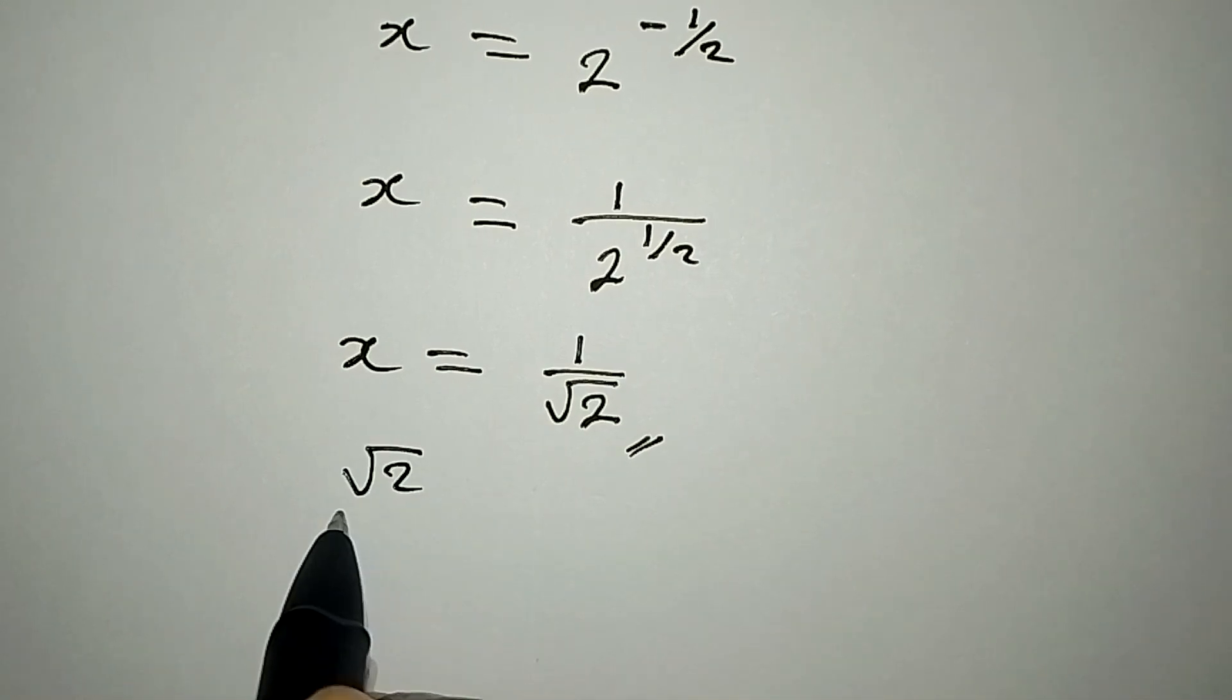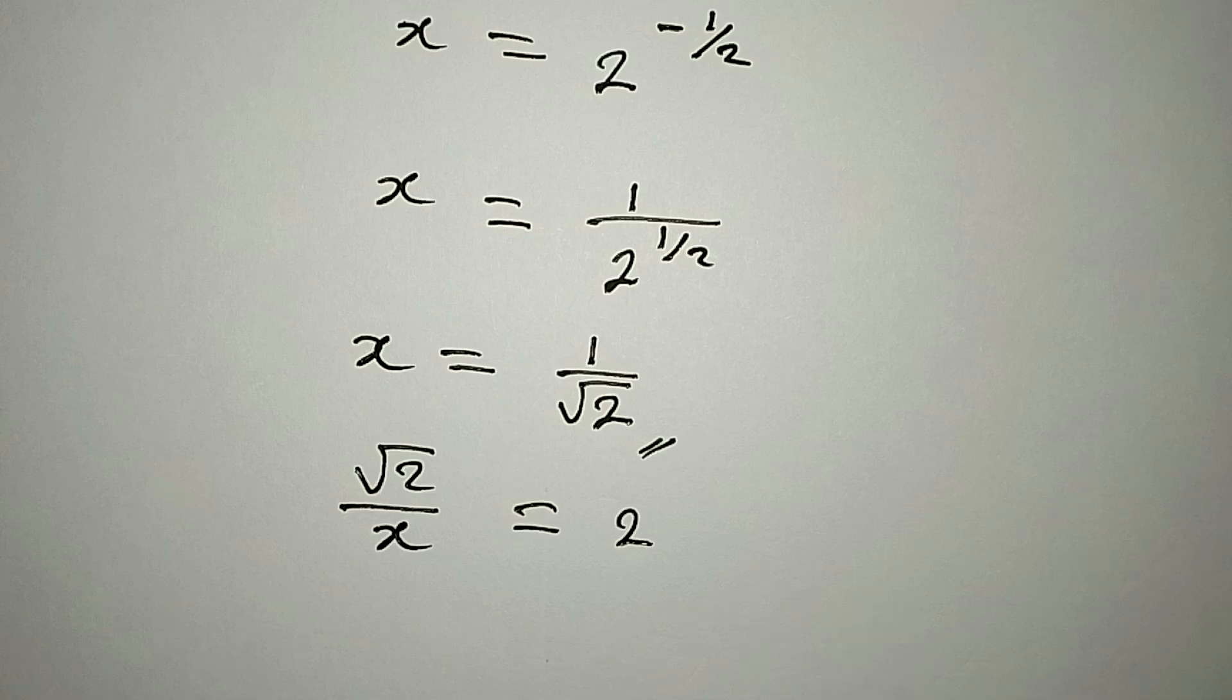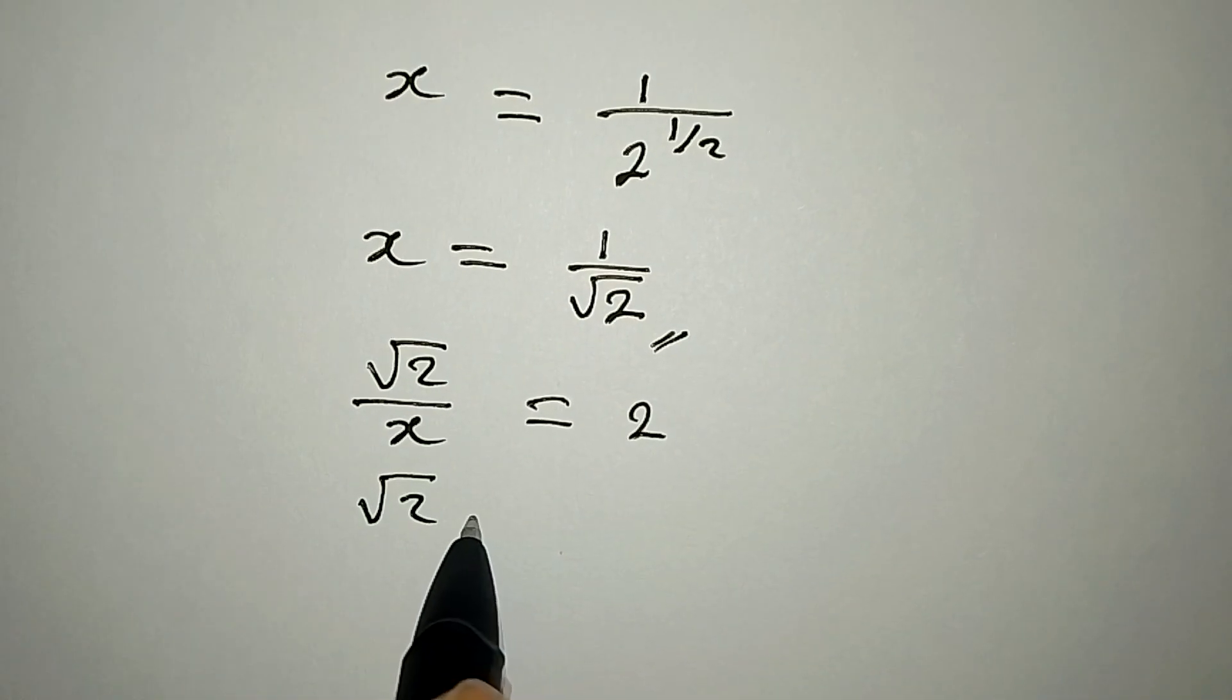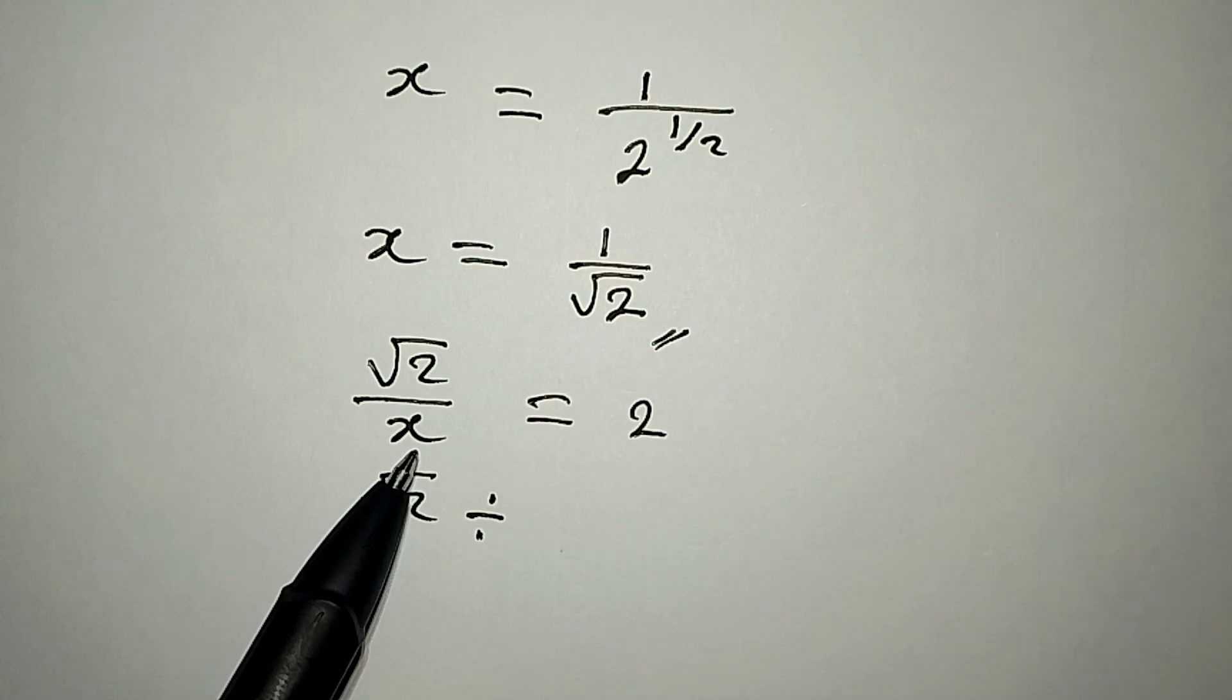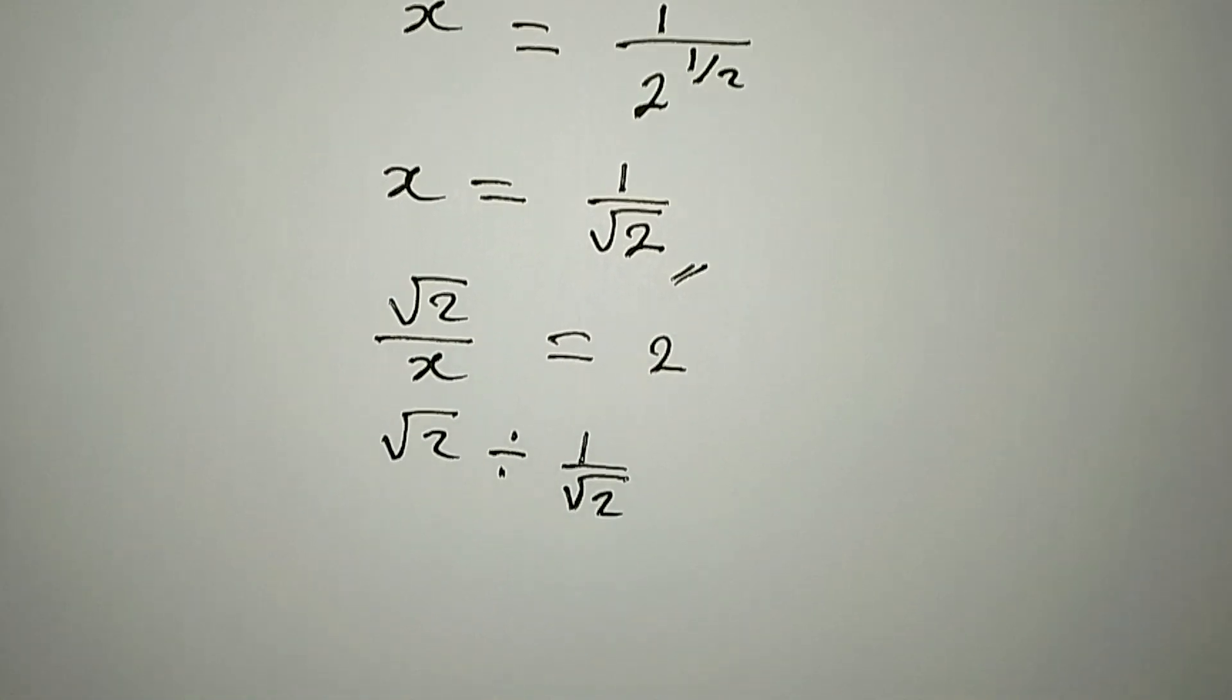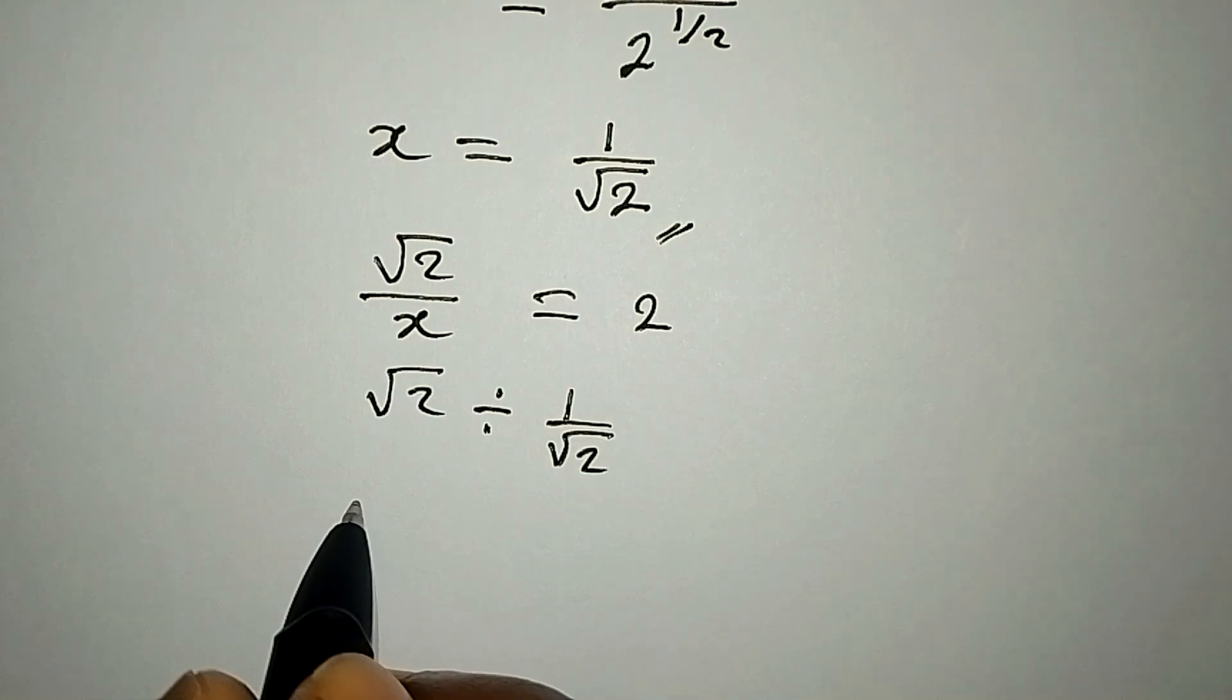We had square root of 2 over x equals 2. So this means we have square root of 2 divided by x, and our x is now 1 over square root of 2. Turn this around so we have square root of 2.